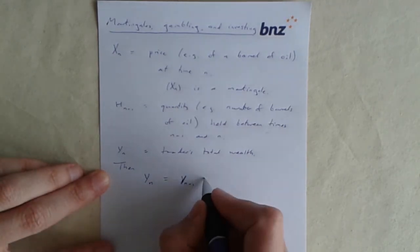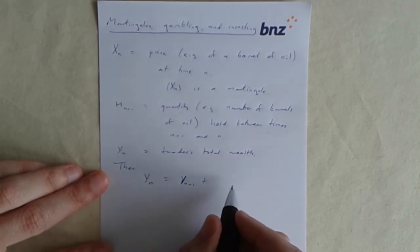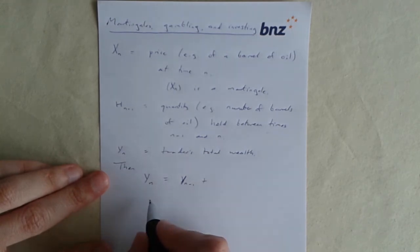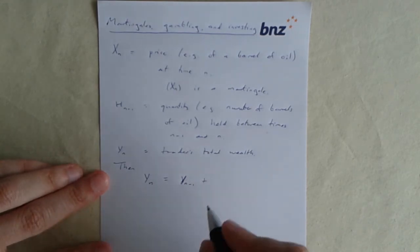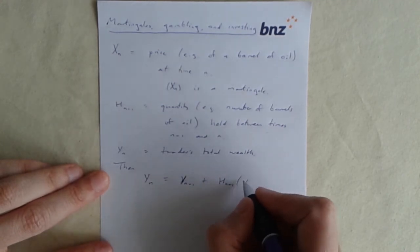And then yn is going to be the trader's total wealth. How much money he has.